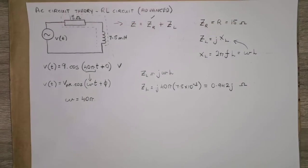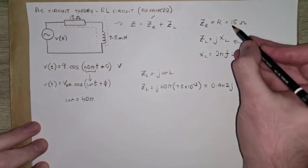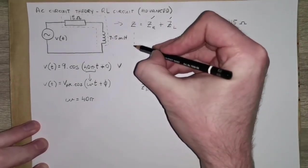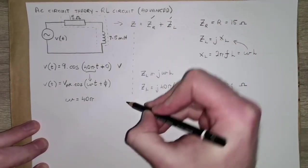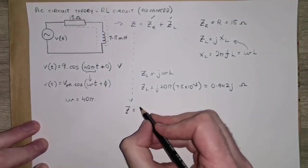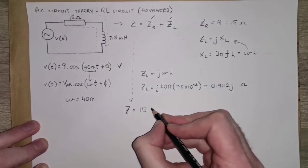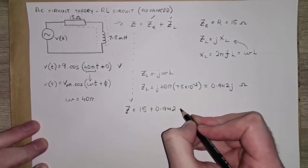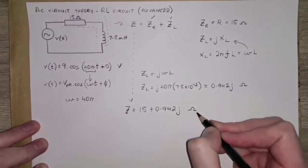So that's coming out then as 0.942 j ohms. Let's swap back to the overhead camera there for a moment. So now we have both of these values.